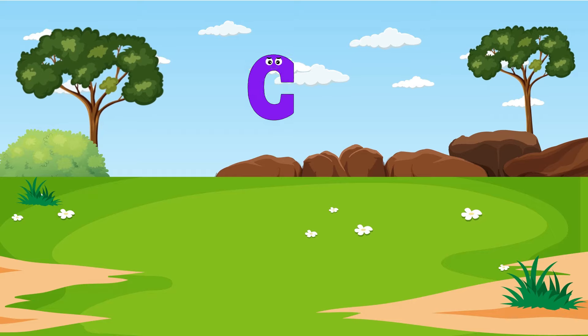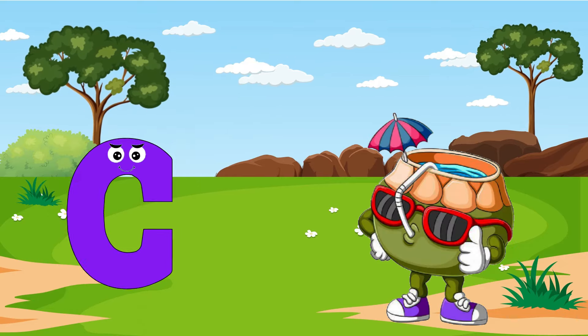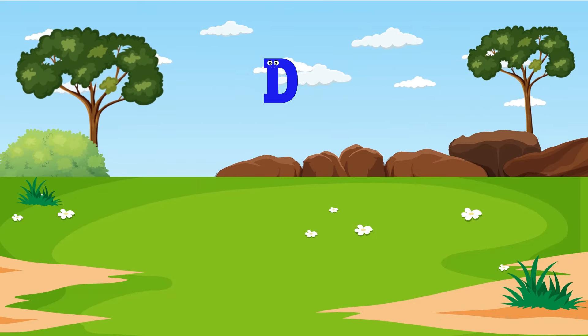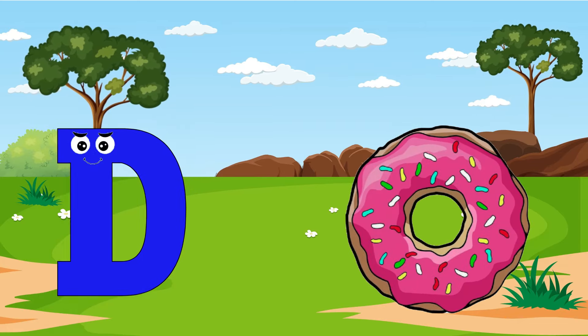B Baby. C is for Coconut, C, C, Coconut. D is for Donut, D, D.